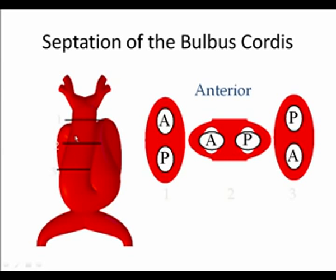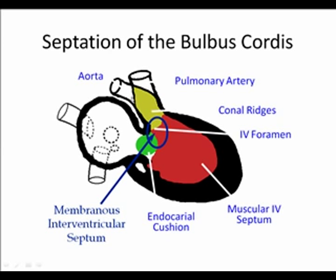Looking from cephalic to caudal directions, we can see the spiraling of the aorticopulmonary septum. The spiraling aorticopulmonary septum will intersect the muscular interventricular septum and the endocardial cushion tissue to form the membranous interventricular septum.